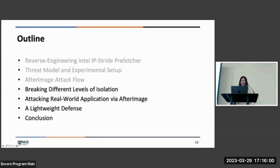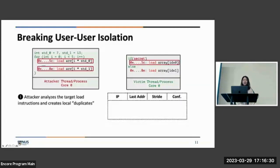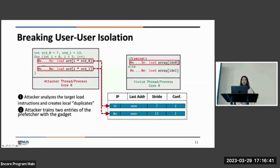Thank you. So let's first take a look at how cross user-user boundary attack can be implemented. So we, on the right side, we have the victim code and clean prefetcher. So the victim has a secret condition that the attacker aims to leak. And the secret condition can determine the execution direction of the branch. Under this two directions of the branch, there are two load instructions with IP of 5C and 8E, respectively. Now, the attacker shows up. It first analyzes the target load instructions. This can be done by using the assembly tool such as objdump. And it creates a local duplicate. Next, it trains two entries of the prefetcher with the gadget. And gadget here is simply a loop. And note that we are using two different strides to train the two load instructions to better distinguish them in the future.